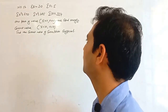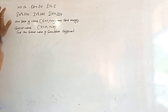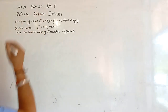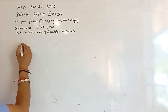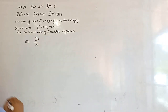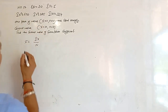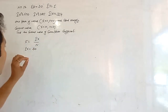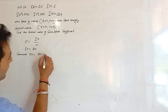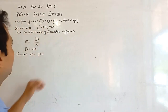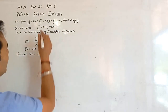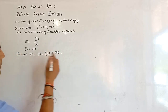Now we find out the correct value of the correlation coefficient. First of all, we calculate the correct values of summation x, summation y, summation x square, summation y square, and summation xy. For corrected summation x: 30 minus the incorrect value 11 plus the correct value 10, that is 29.